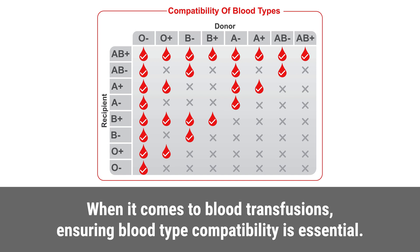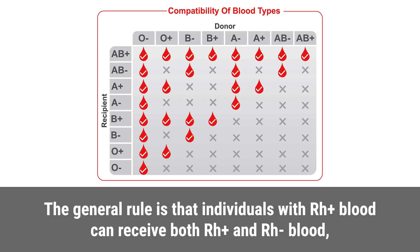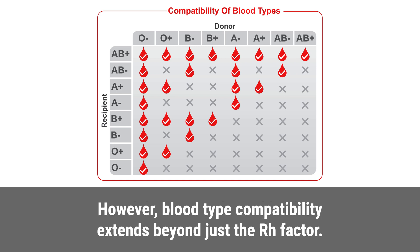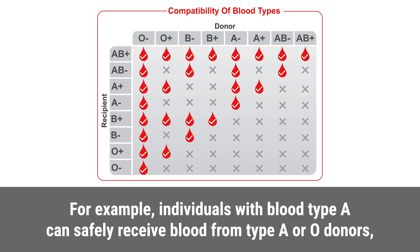The general rule is that individuals with Rh positive blood can receive both Rh positive and Rh negative blood, while those with Rh negative blood should only receive Rh negative blood. However, blood type compatibility extends beyond just the Rh factor. For example, individuals with blood type A can safely receive blood from type A or O donors, but not from type B or AB donors.